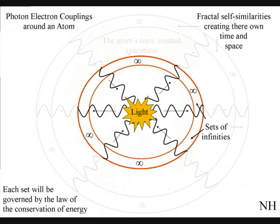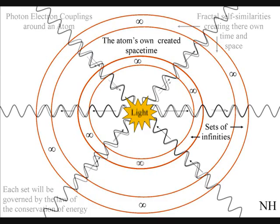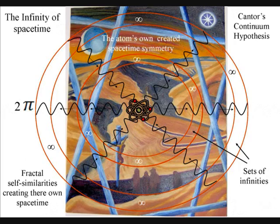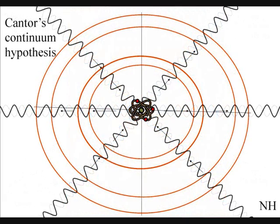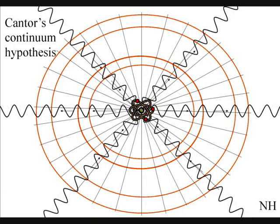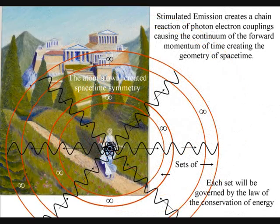In quantum atom theory, infinity is an actual reality of our universe, not a mathematical paradox. Infinity can always be divided into ever-decreasing or increasing sets of infinities. This is because each atom is creating its own space-time geometry by the forward expansion of time that can always be divided into sets of infinities.